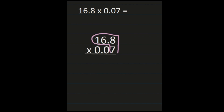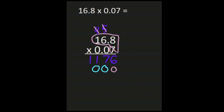We'll start with 8 times 7, which is 56. We'll place the 6 and carry the 5. Then 7 times 6 is 42, plus 5 is 47 — the 7 goes here and we carry the 4. 7 times 1 is 7, plus 4 is 11. We could stop here since next we'd be multiplying everything by 0, but to show how that works, we'll drop a 0 and do the next line. 0 times 8 is 0, 0 times 6 is 0, and 0 times 1 is 0 — we get a row of zeros.